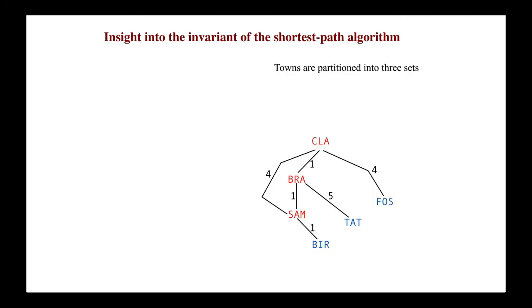You can see that the towns are partitioned into three sets. First, a red set called the settled set, S. For each town in this set, the shortest distance from the start town is known.